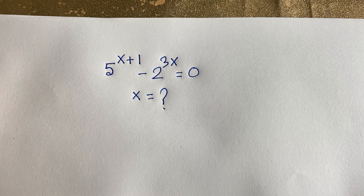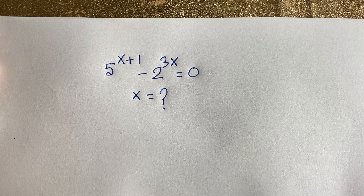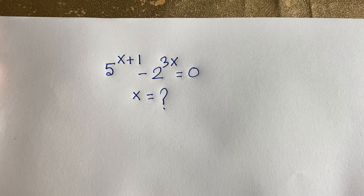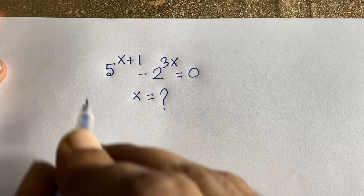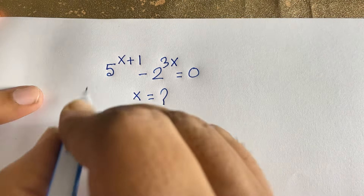2 to the power x+1 minus 2 to the power 3x is equal to 0. What is x equal to? How to solve this exponential expression — an interesting math question.